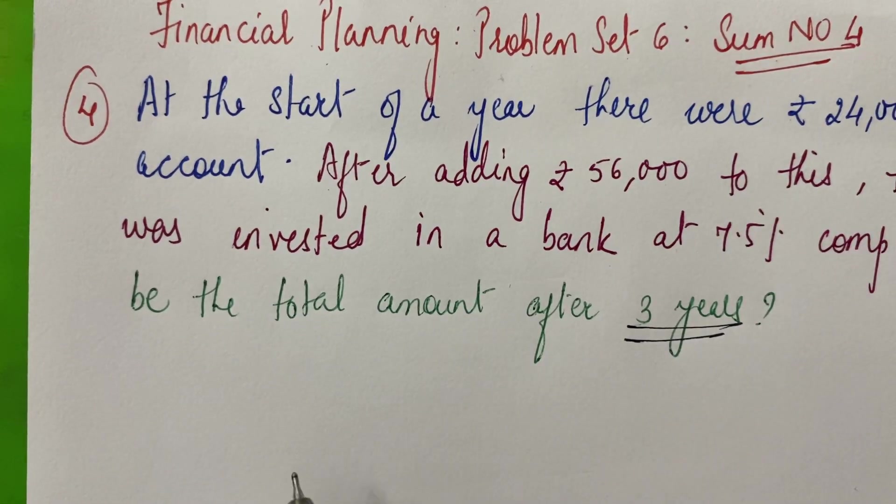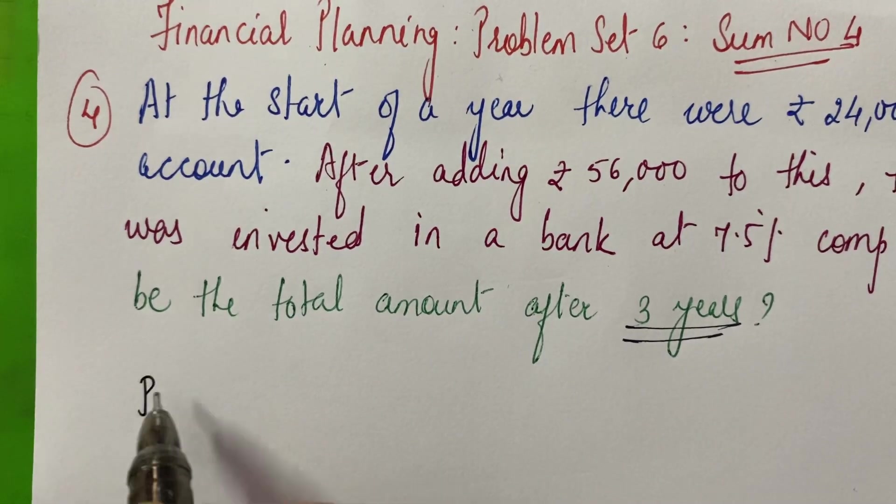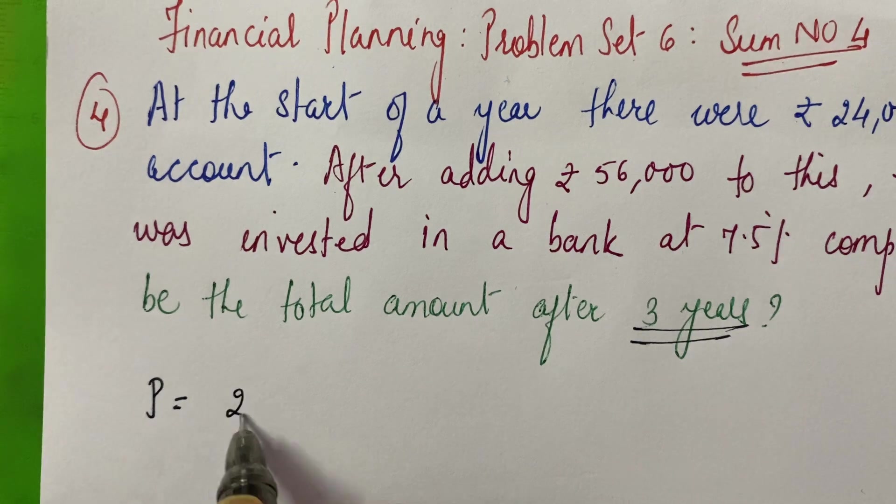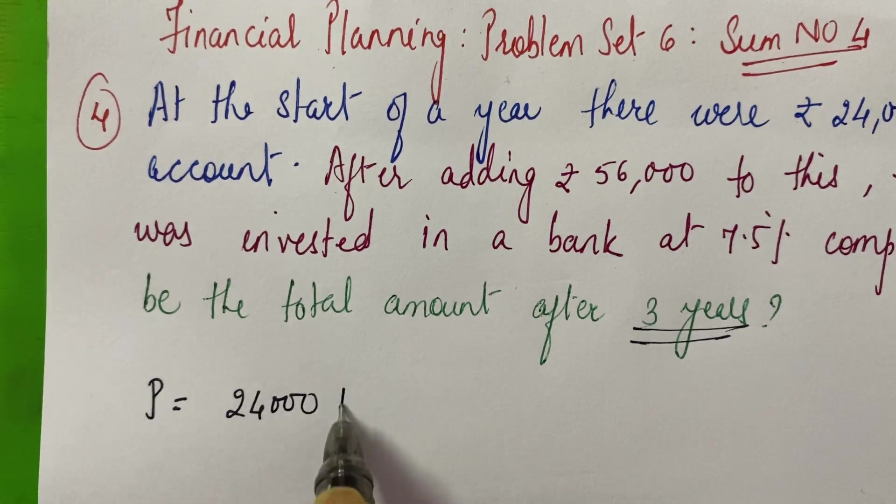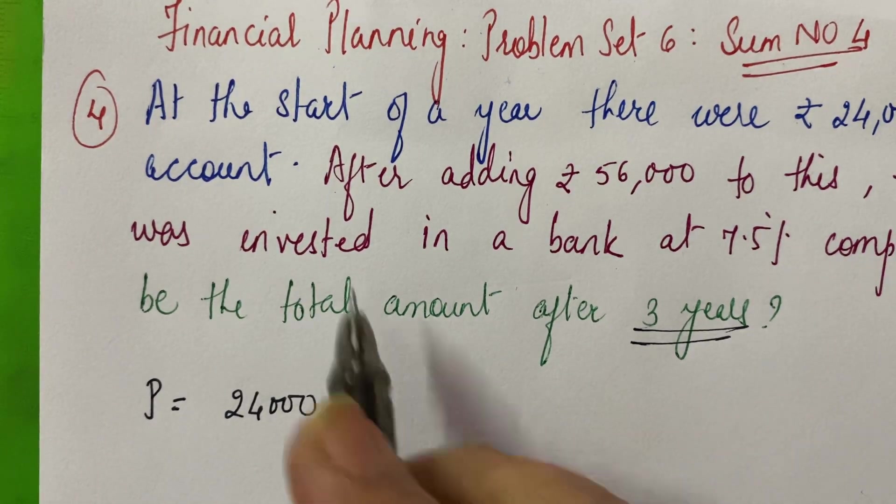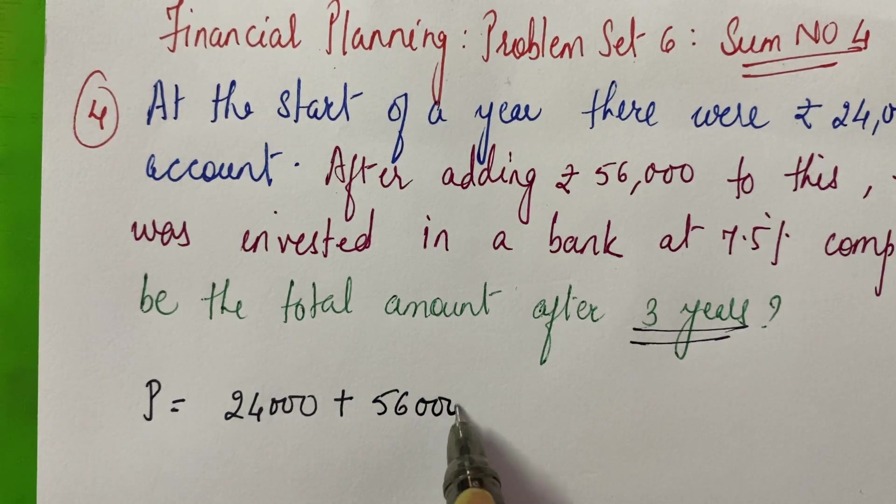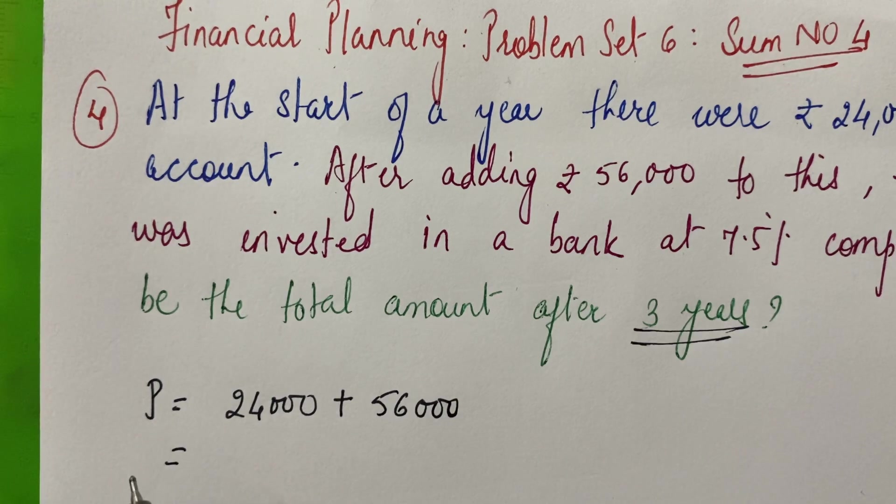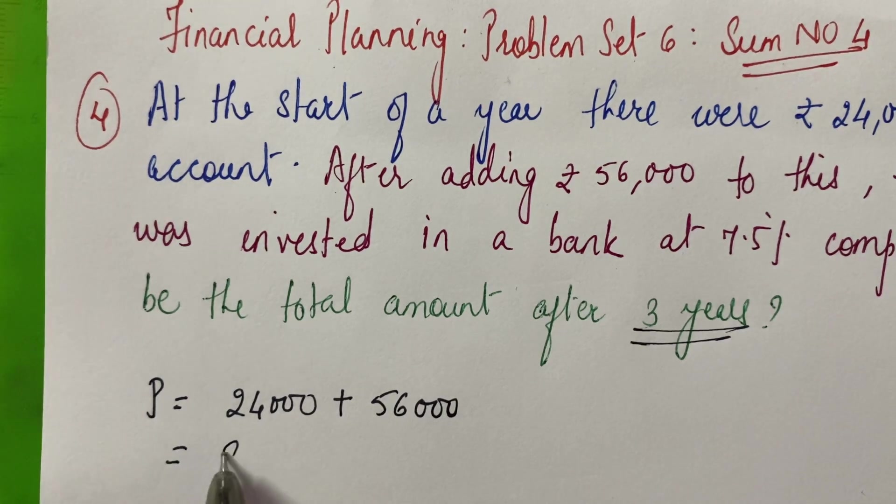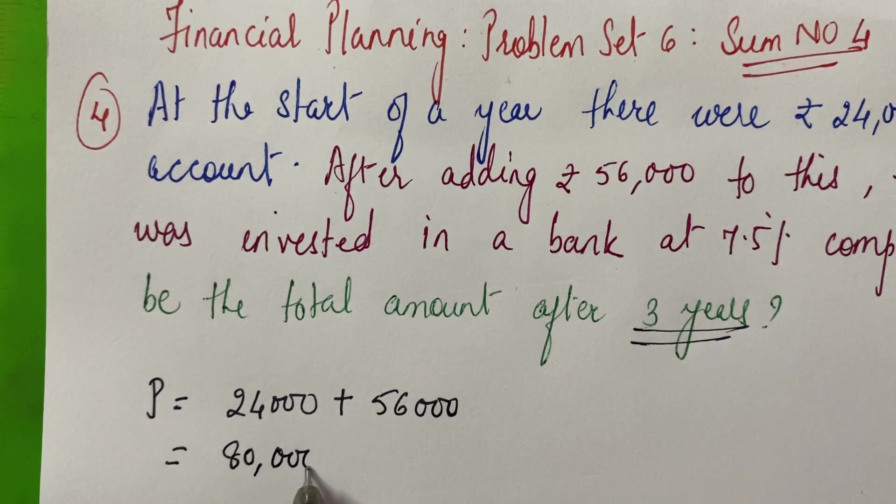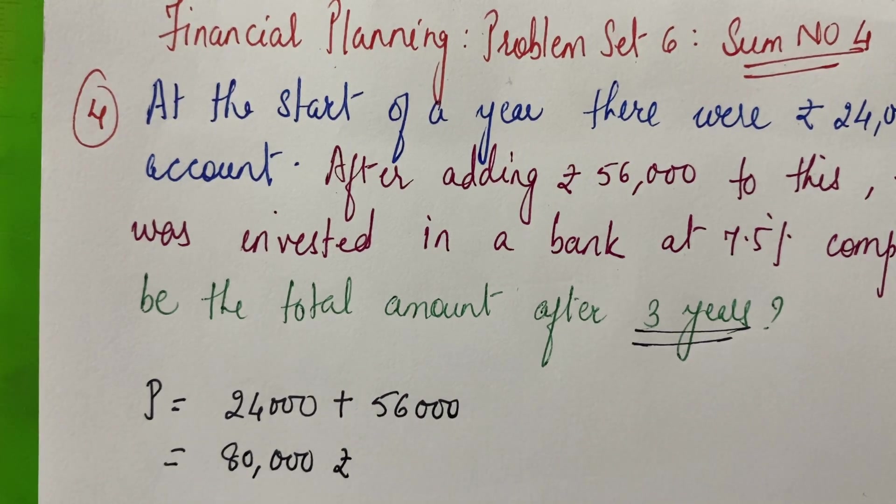So first of all, the principle that we have to take here will be: initially there were Rs. 24,000, you have to add the Rs. 56,000 that were added afterwards. Okay, so the total amounts to how much? Rs. 80,000. Correct? This is the principle.